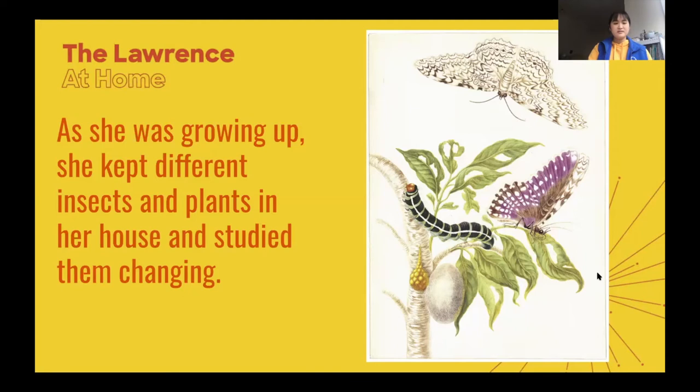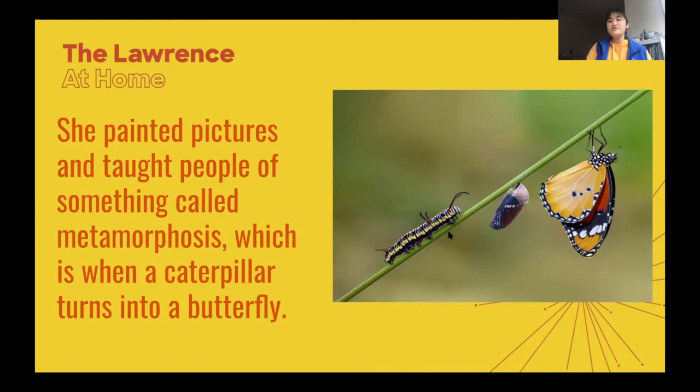She painted pictures and taught people about something called metamorphosis — that's a big word. Say it with me: metamorphosis! Metamorphosis is when a caterpillar turns into a butterfly. Right here we see the different stages of metamorphosis: the caterpillar is crawling along, then it goes into something called a cocoon, and then it comes out as a beautiful butterfly. It's all the same insect.